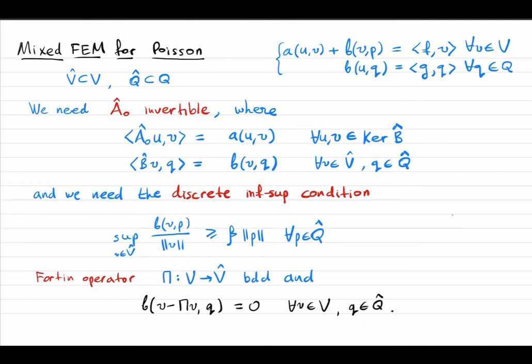We want to look at some stable finite elements for the mixed formulation of the Poisson equation, focusing mainly on the lowest order Raviart-Thomas elements. Let's recall the general theory of saddle point problems and their discretization.